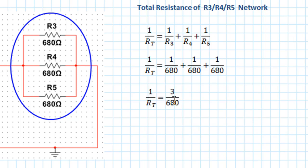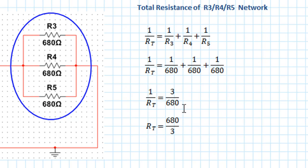Before you start using the calculator, when you're adding fractions you need to put them over the same denominator. In this case all three denominators are 680, so we can simplify to 1/RT = 3/680. Remember this is 1/RT, so we invert both sides to get RT = 680/3, giving RT = 226.667 ohms.